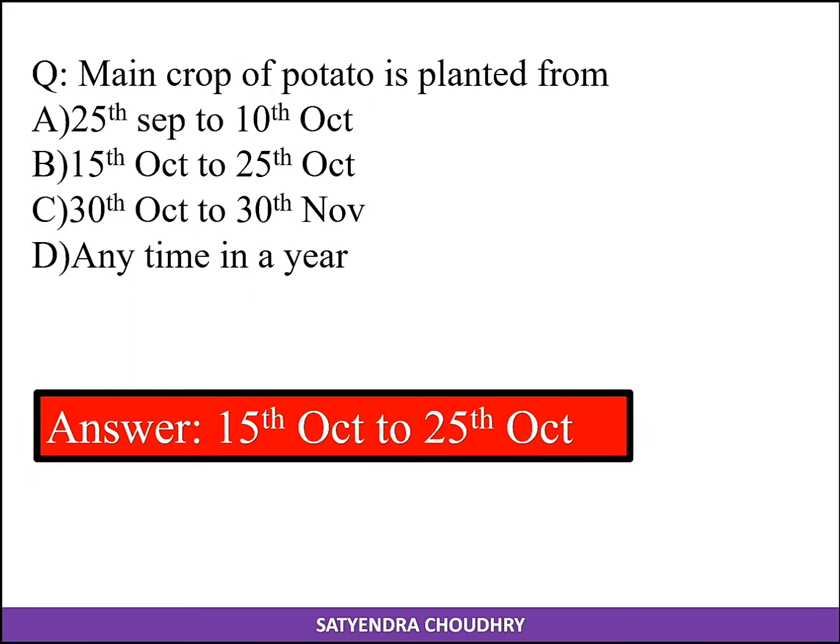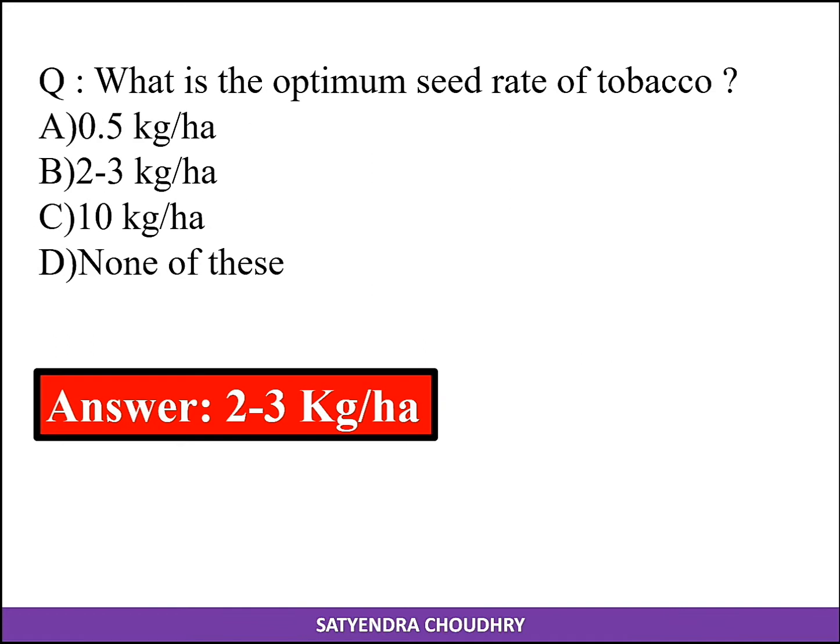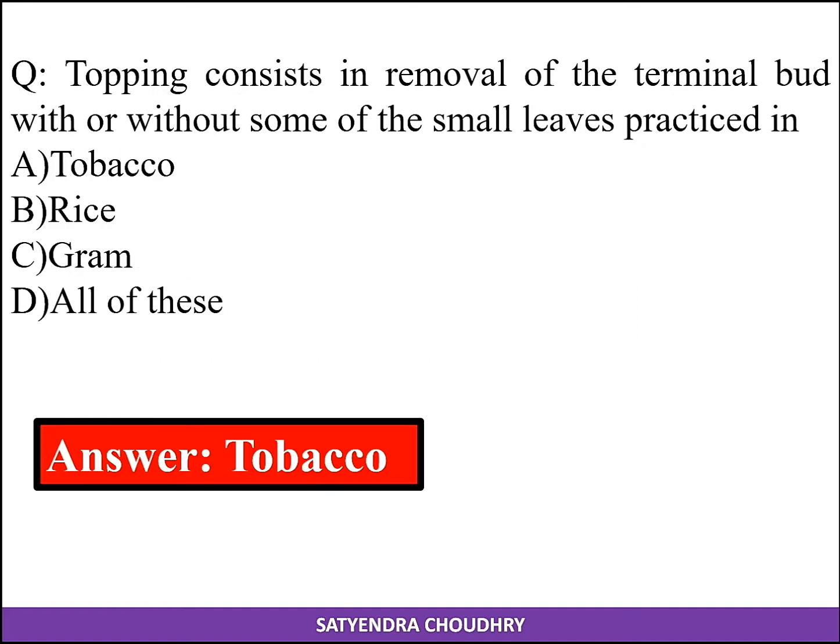Main crop of potatoes is planted from 15 October to 25 October. The optimum seed rate of tobacco is 2 to 3 kg per hectare. Topping consists of removal of the terminal bud with or without some of the small leaves, and is practiced in tobacco.